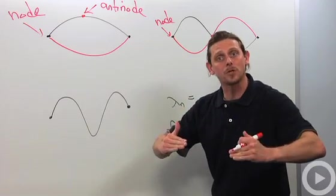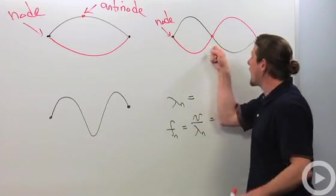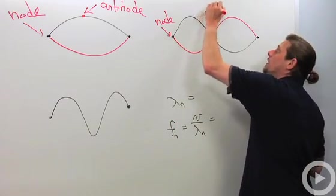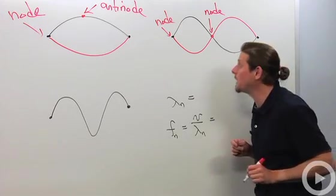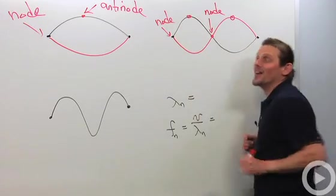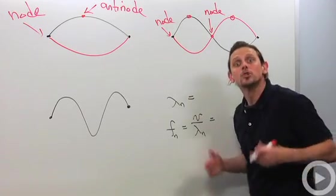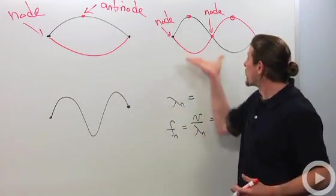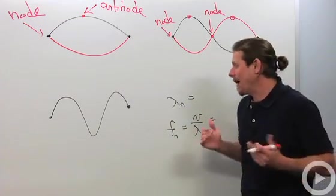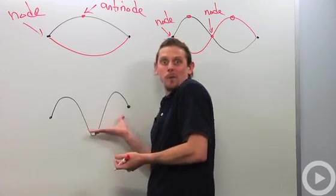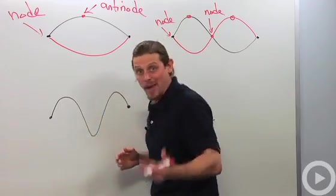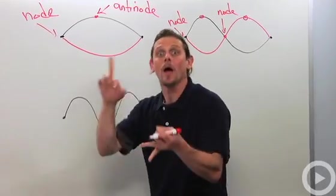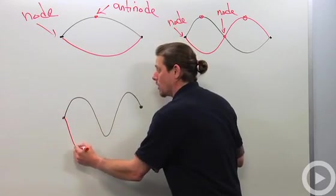When we jumped up to the next level, we picked up another node and look what else we picked up. Another anti-node. So now I got two anti-nodes and three nodes. What about this one? Well, now we bumped it up again. So we're going to pick up another anti-node and another node.